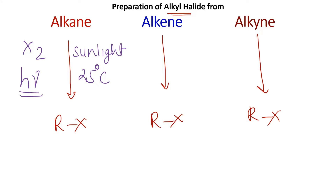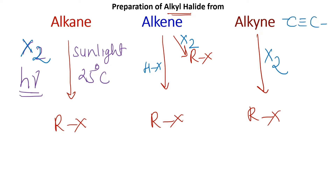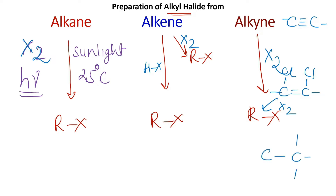If it is alkene, there are two ways to prepare alkyl halide: we can use HX, and we can also use X₂. If it is alkyne, again X₂ is used. Alkyne has a triple bond, so first this gives a C=C (di-substituted alkene), and again the use of halogen X₂ will give the tetra-substituted alkyl halide.